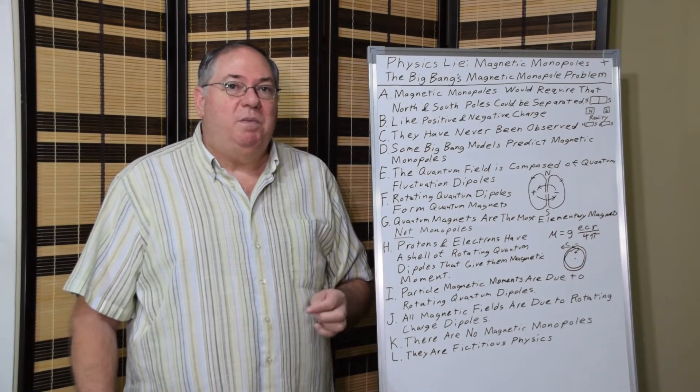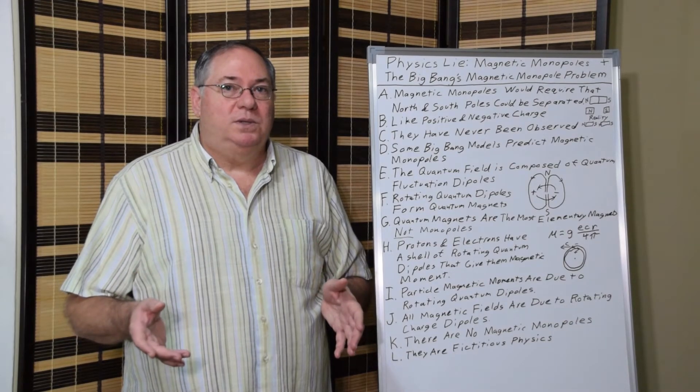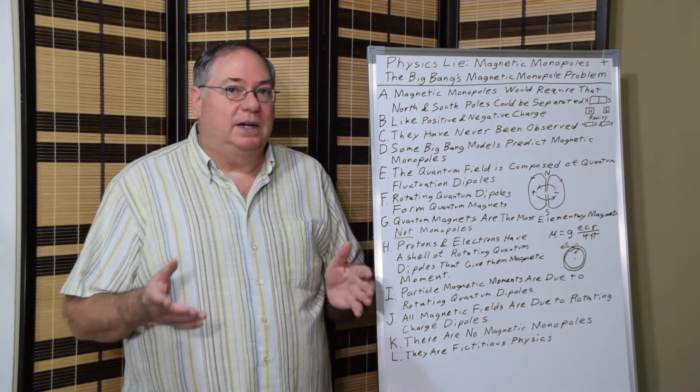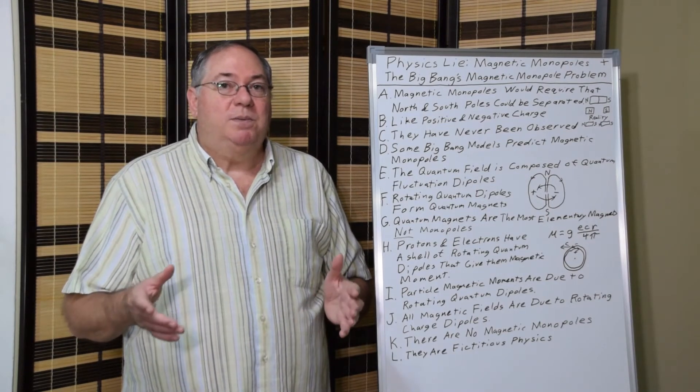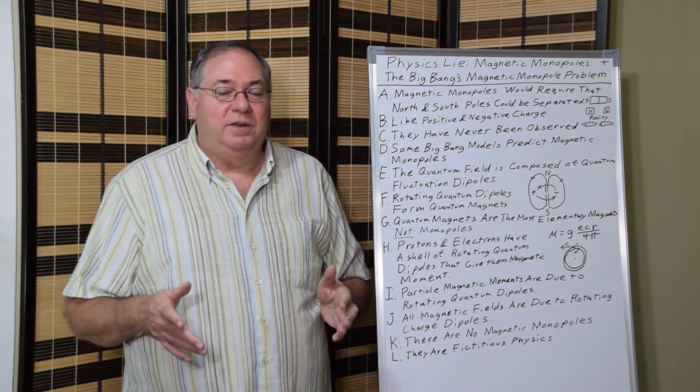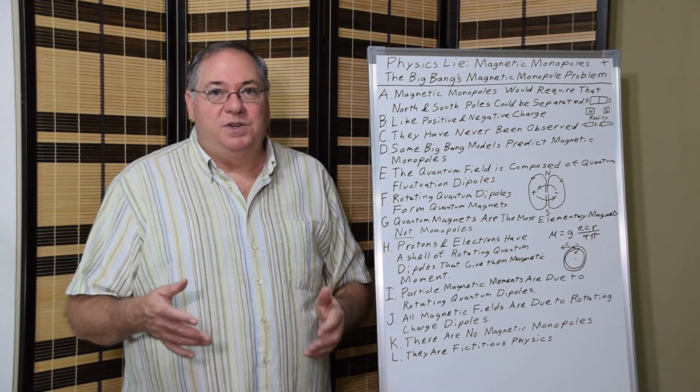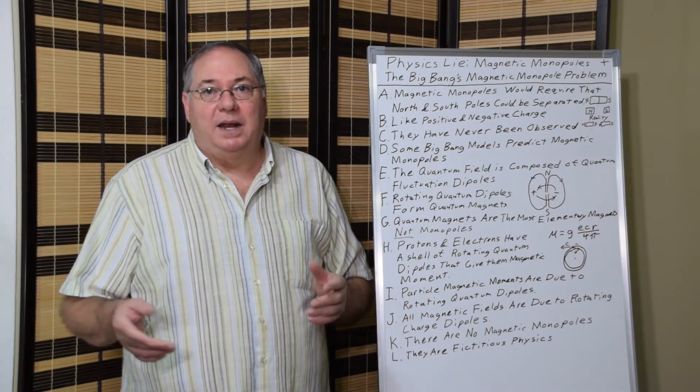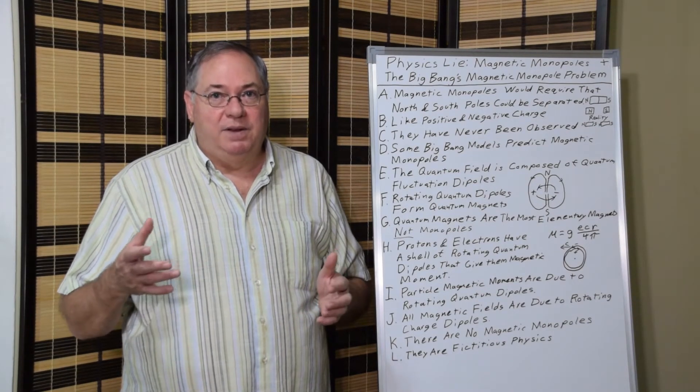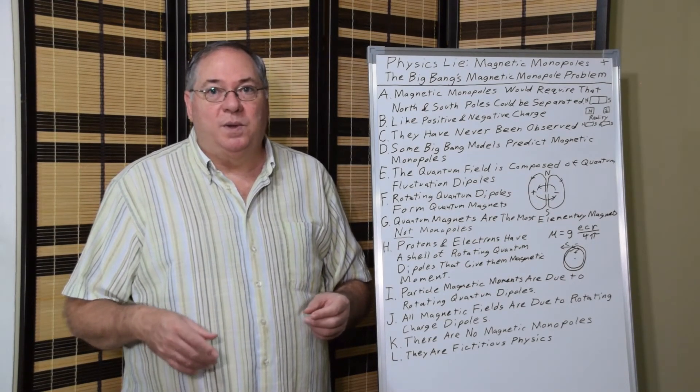So even when we deal with particles and their magnetic moments, they're explainable as rotating dipoles. So ultimately, all magnetic fields come down to rotating charge dipoles form the magnetic fields. So the magnetic fields always have north and south poles.